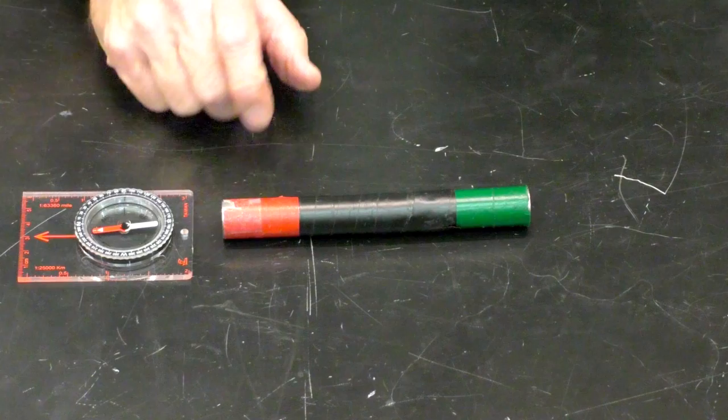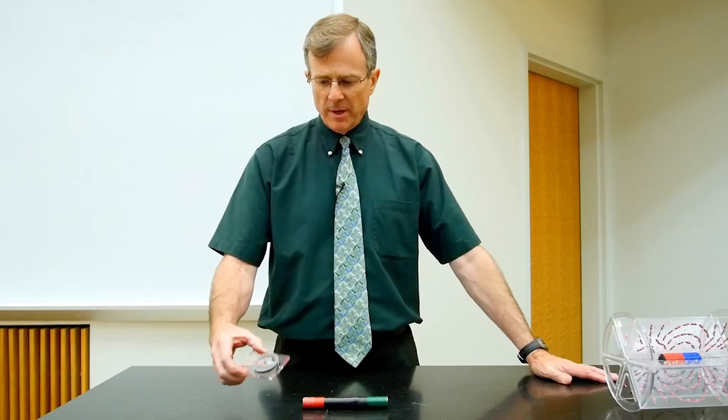I've got a bar magnet on the table here. Its north pole is denoted red, south pole green.